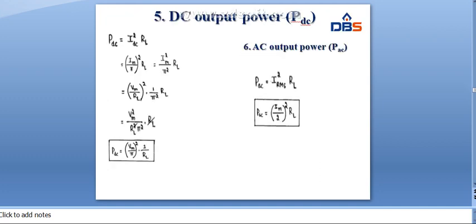Next, the DC output power P_dc = I_dc² × RL = (Im/π)² × RL = Im²/π² × RL, or equivalently (Vm/π)² × (1/RL). Similarly, the AC output power P_ac = I_rms² × RL = (Im/2)² × RL.